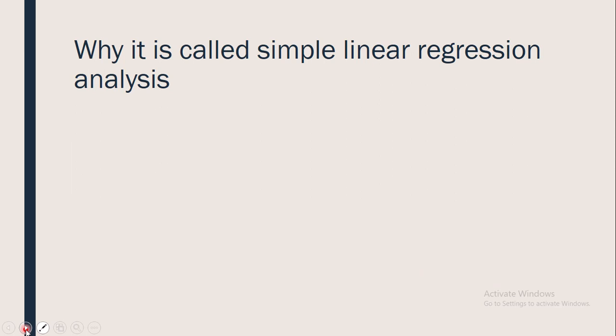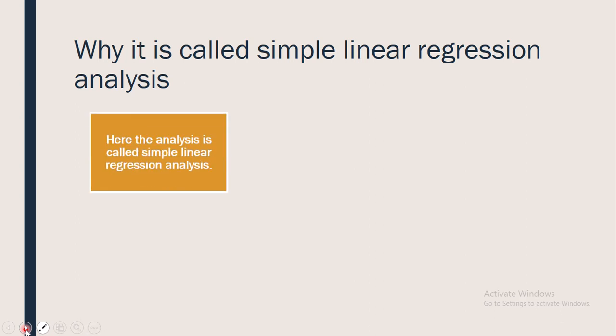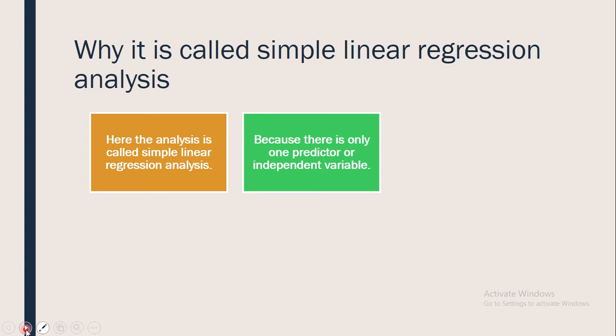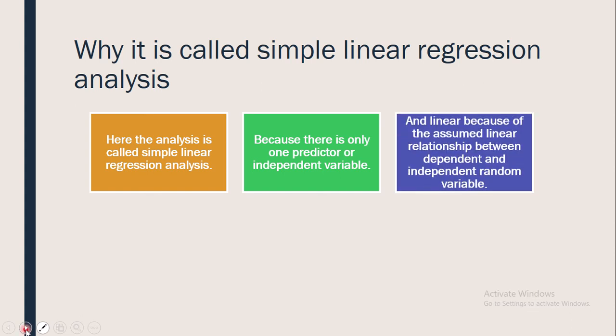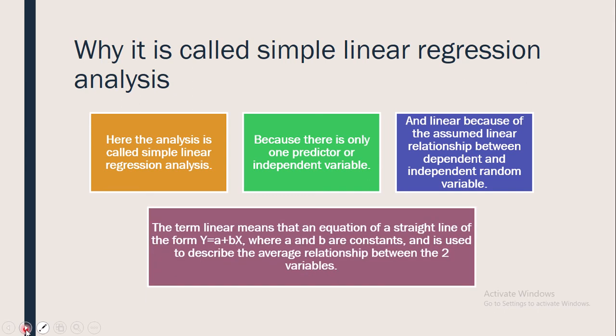When we have one independent variable and one dependent variable, the scenario is called simple linear regression analysis. It is called 'simple' because there is only one predictor or independent variable. It is called 'linear' because we assume a linear relationship between the dependent and independent variable — that is, an equation of a straight line of the form y = a + bx, where a and b are constants, describing the average relationship between the two variables.